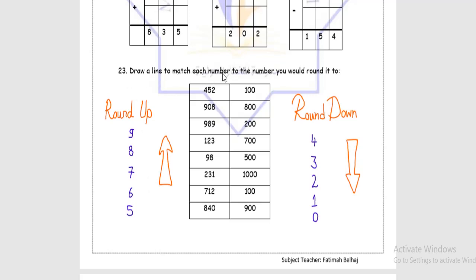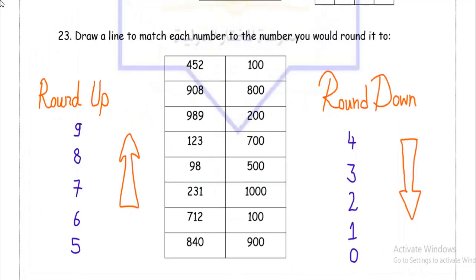Draw a line to match each number to the number you would round it to. But before we do that, let's quickly refresh our memories. We round down when the neighbor of the number we want to round to is either 0, 1, 2, 3, or 4. And we round up when the neighbor of the number which we want to round to is either 5, 6, 7, 8, or 9.